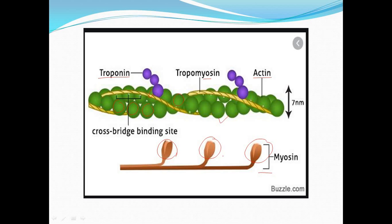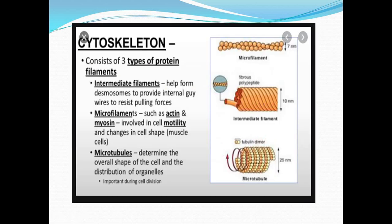This is the image of actin and myosin. These are coming under the microfilament. I hope it is clear. Here are three types of cytoskeletal structures. First is intermediate filament, second is microfilament which I have discussed here, and third is microtubule. Microfilaments such as actin and myosin are involved in cell motility — that means cell movement — and changes in cell shape.